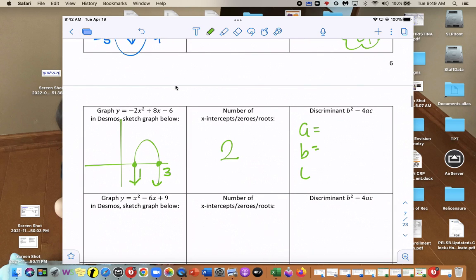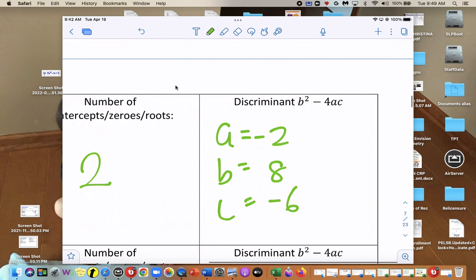So we need a, b, and c. Negative 2, 8, negative 6. Let's plug into b squared minus 4ac. So it would be 8 squared minus 4 times negative 2 times negative 6.